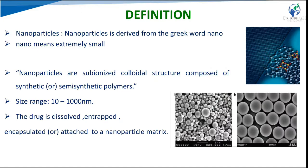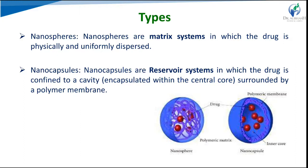Nanoparticles, similar to liposomes and neosomes, are mainly taken up by the reticuloendothelial system after administration. Regarding types, similar to microparticles and microspheres, in any sustained controlled drug delivery system we use matrix or reservoir type systems. In nanospheres, the matrix type system is used where drug is uniformly distributed throughout the polymer matrix. In nanocapsules, a reservoir system is used where the drug is encapsulated and surrounded by a polymer membrane.